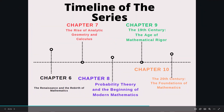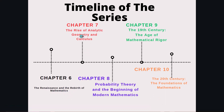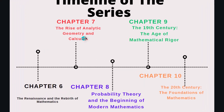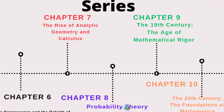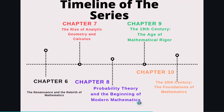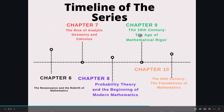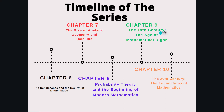Then we have Chapter 6, which is the Renaissance and the Revival of Mathematics. Chapter 7, the Rise of Analytic Geometry and Calculus. Chapter 8, Probability Theory and the Beginning of Modern Mathematics. Chapter 9, the 19th Century, the Age of Mathematical Rigor. And Chapter 10, which is the 20th Century, the Foundation of Mathematics.